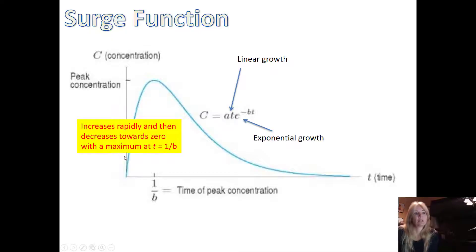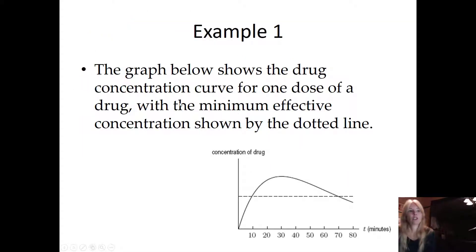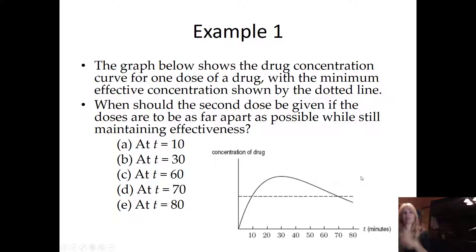The graph below shows the drug concentration curve for one dose of a drug with a minimum effective concentration shown by the dotted line. This minimum effective concentration basically says when you take the drug, nothing's really going to happen until you get above that line. As the drug comes out, typically this is where you want to take the second pill again. When should the second dose be given if the doses are to be as far apart as possible while still maintaining effectiveness?